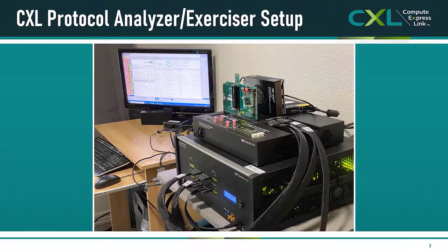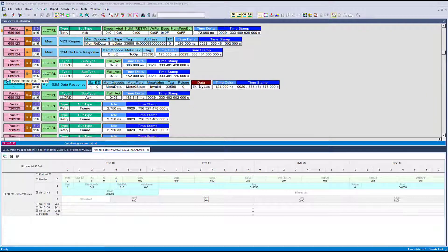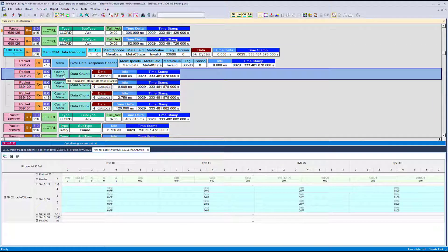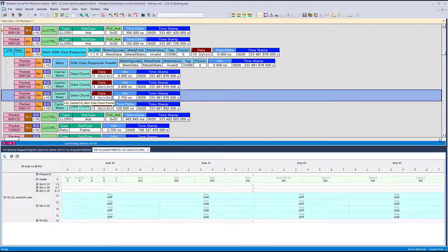The easy-to-use graphical user interface provides a clear representation of all traffic on the CXL link, from the logical physical layer, the arb-mux negotiations, the data link layers for CXL-IO and cache and mem devices, and also the transaction layers. The powerful triggering and filtering capabilities of the hardware and software allow the user to quickly and accurately identify the events of interest for both validation and for debugging and finding the root cause of error conditions.